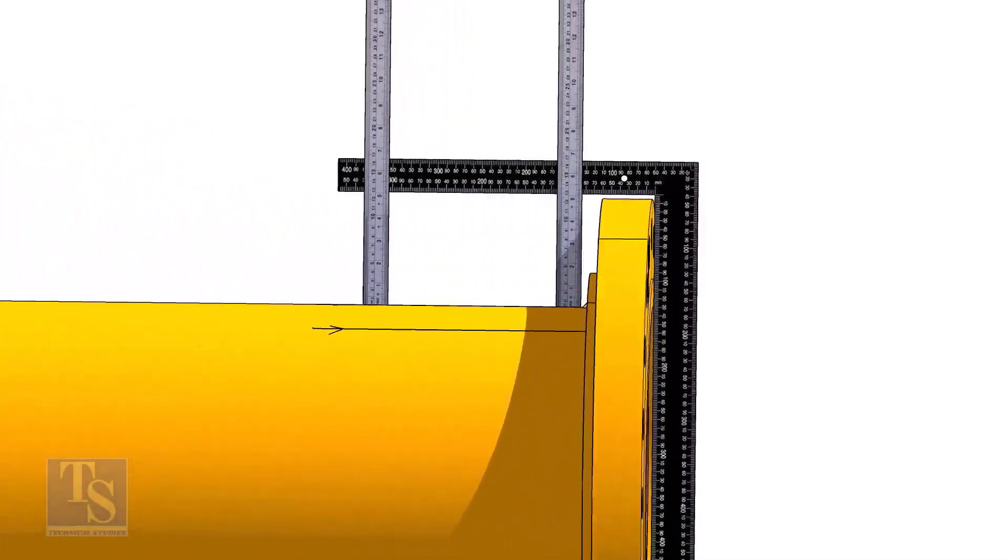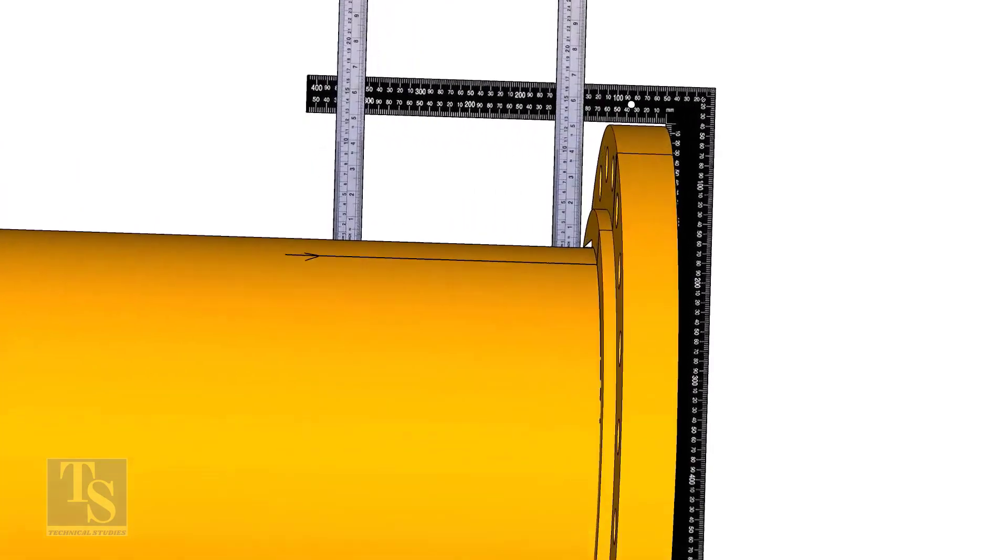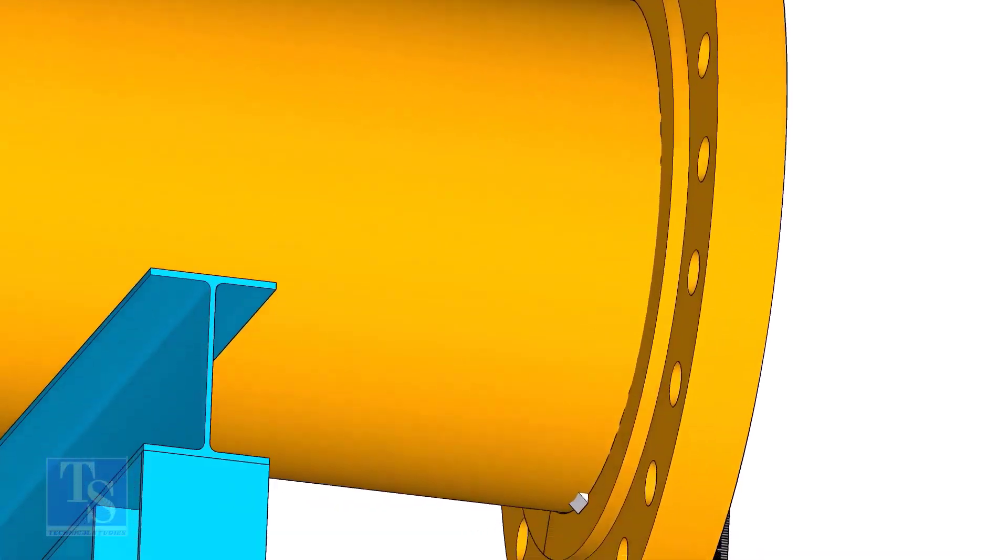Tack weld on the top of the pipe with the flange and check the squareness. If correct, tack weld at the bottom side also.